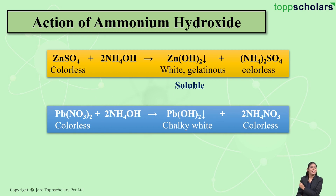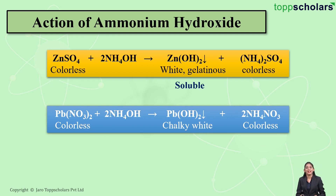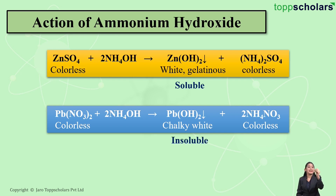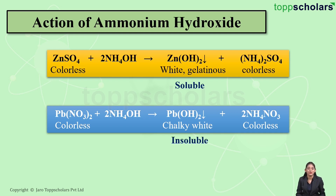Let us move on to lead nitrate. Lead nitrate is a colorless solution. If you add drops of ammonium hydroxide, you get a chalky white precipitate of lead hydroxide, along with ammonium nitrate solution. This precipitate of lead hydroxide is insoluble in excess ammonium hydroxide. So if you get a chalky white precipitate that is insoluble in excess ammonium hydroxide, the salt contains Pb²⁺ ion.